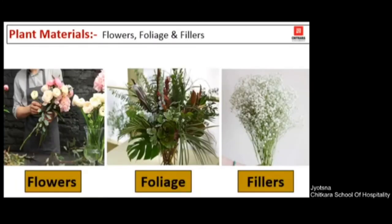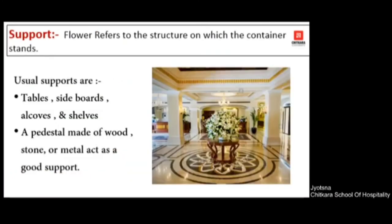The next ingredient is plant material. The last ingredient is flowers, foliage, and fillers. As discussed in the previous session on flower arrangement, flowers come in many colors — rose, carnation, orchids, bird of paradise, and foliage such as green leaf are used. Fillers are used to cover the remaining space in your plant arrangement.